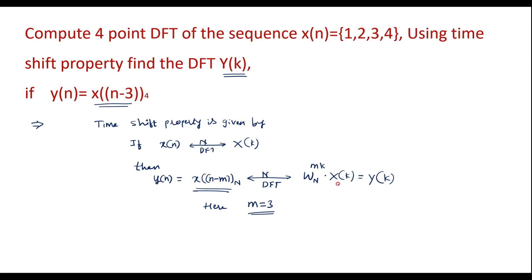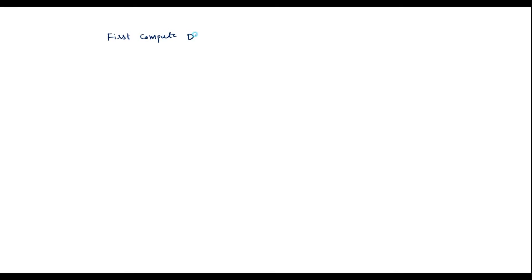To apply this property directly, I first need to calculate X(k), which is the DFT of x(n). So first we compute the DFT of x(n) = {1, 2, 3, 4}. I will use the matrix method to find the DFT.